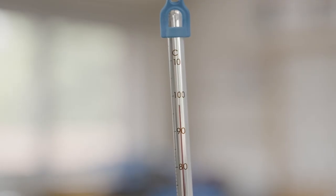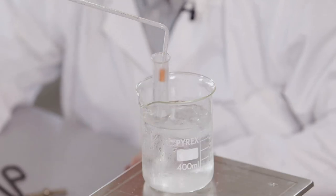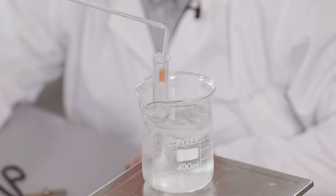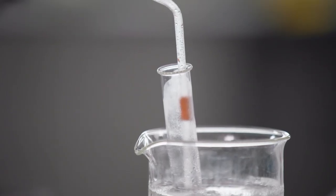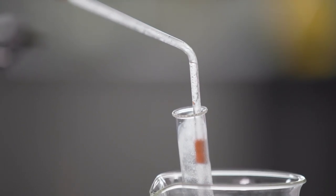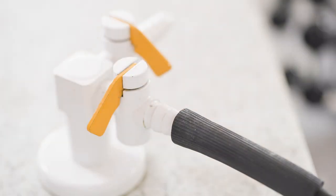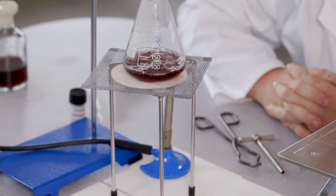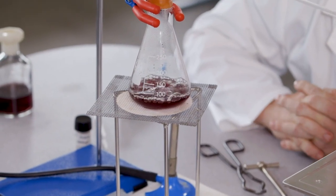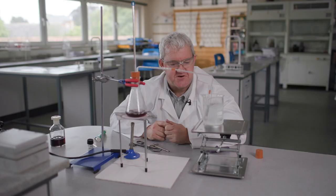Now after a couple of minutes of doing this, you should be able to see through the receiver, through the ice bath and the receiver that we have collected some water. And at this point I can turn the Bunsen burner off. Now I'm not going to do anything to the apparatus until the boiling has stopped and until there's no more steam coming out of the delivery tube.